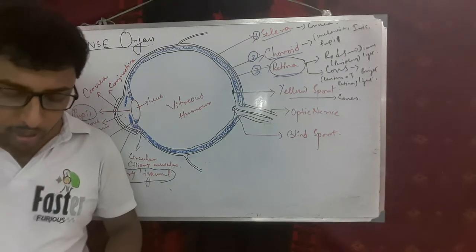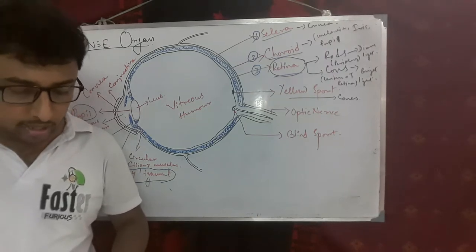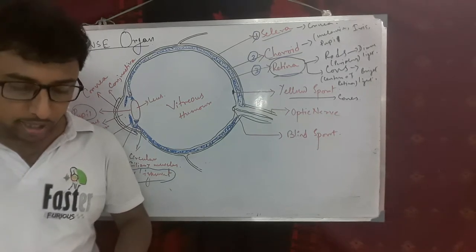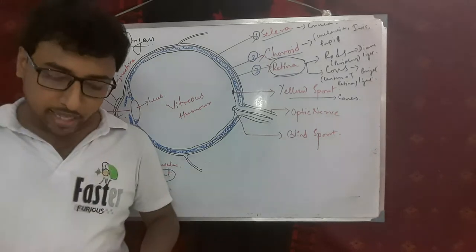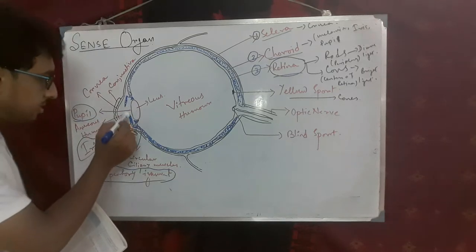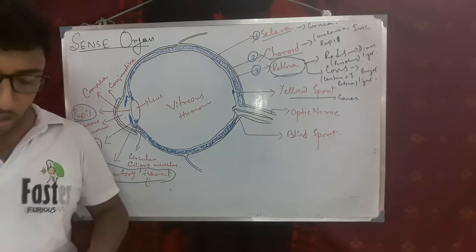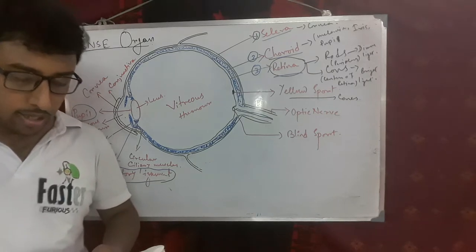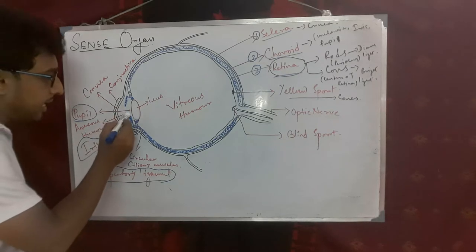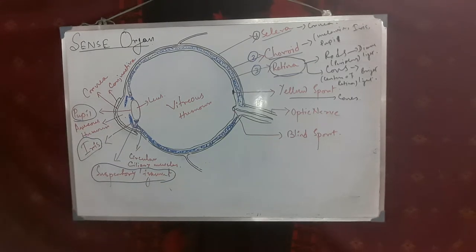In the front of the eye, the choroid expands to form the ciliary body, which contains circular smooth muscles. The smooth muscles of the ciliary body alter the shape of the lens — that is the function of the ciliary body. The iris is also an extension of the choroid, covering the lens and leaving a circular opening at the center known as the pupil. The adjustment of the size of the pupil regulates the amount of light entering our eyes.